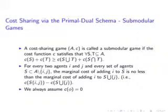We will elaborate on two examples in this section: submodular games, where a simple primal dual algorithm with no modification yields cross-monotonic cost shares, and the facility location game, where extra care needs to be taken to obtain a cross-monotonic cost sharing scheme. In the latter case, we introduce a rather general technique of using ghost duals to turn the standard primal dual algorithm for the problem into an algorithm that returns cross-monotonic cost sharing schemes.